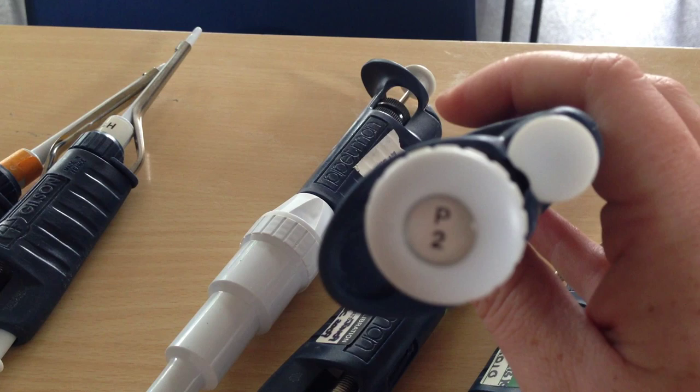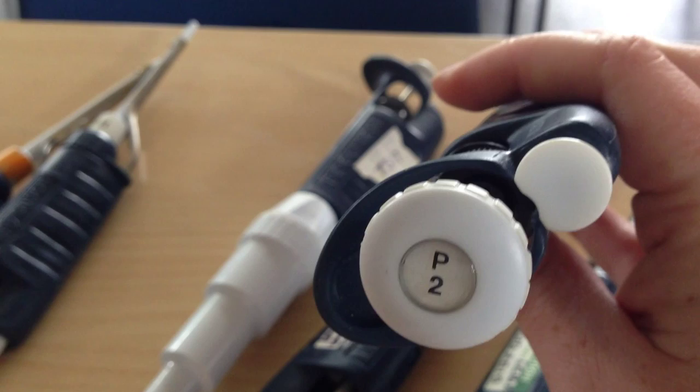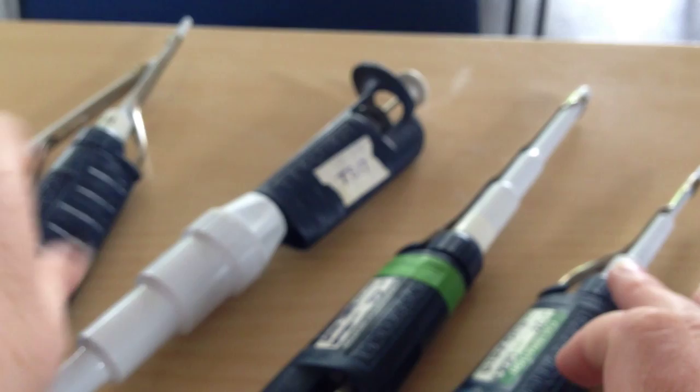Then we have a P2. You can use this for 1 or 2 microliters only. If you try and do 2.5 or 3 microliters with this, you are going to break the pipettes and it's not going to be accurate.